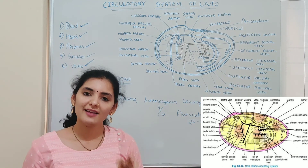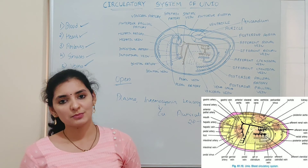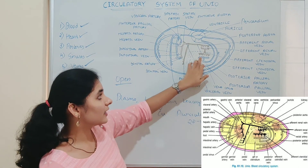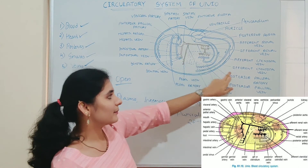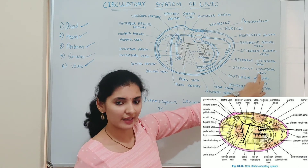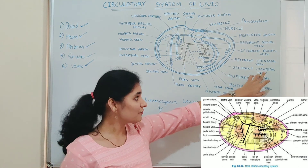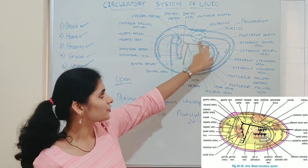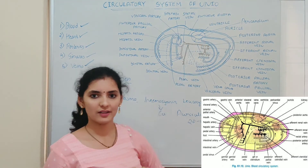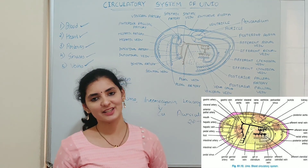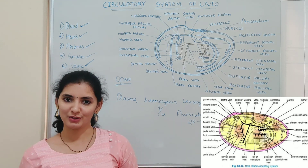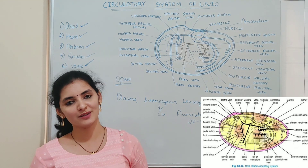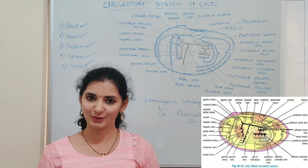The blood is then conveyed to the gill via the afferent tenedial vein, where oxygenation takes place. The oxygenated blood in the gill is collected by the efferent tenedial vein, which supplies it from the gill to the auricle. That is how blood is circulated in the body of Unio. That concludes the circulatory system or blood vascular system of Unio.